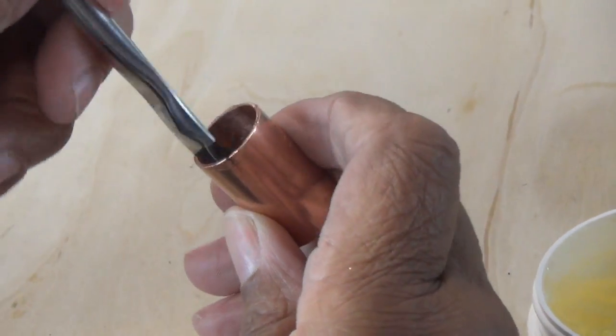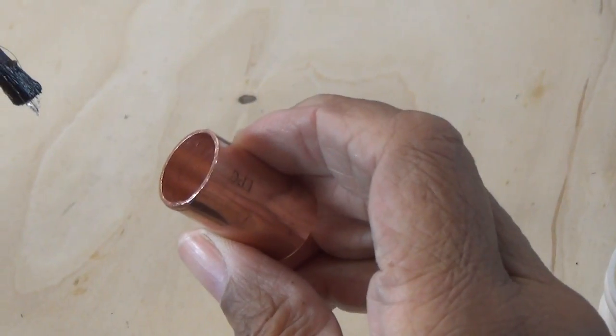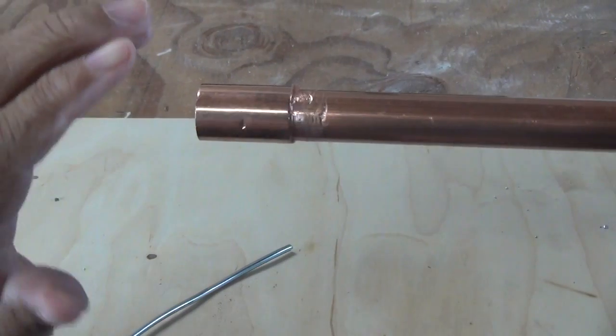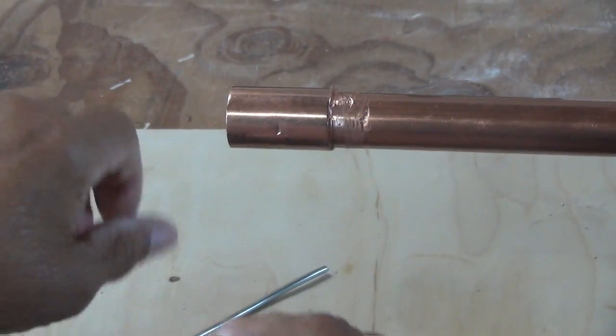I'm going to have to make certain that I get some paste flux on the inside of my coupling. That's what I'm doing here. That's good. Okay, so I've got my pipe and my coupling on. It's fluxed up, clean.